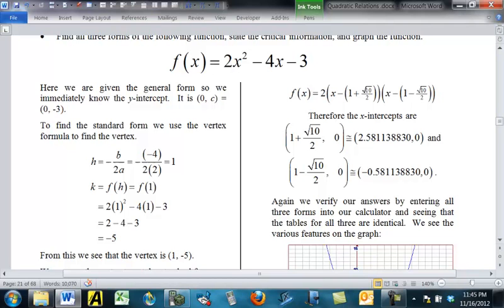We're going to find H by doing minus B over 2A. So, that's the opposite of negative 4 over 2 times 2. Well, that just boils down to be 1. Put 1 in place of X in this one, and you get 2 times 1 squared minus 4 times 1 minus 3 is 2 minus 4 minus 3, which